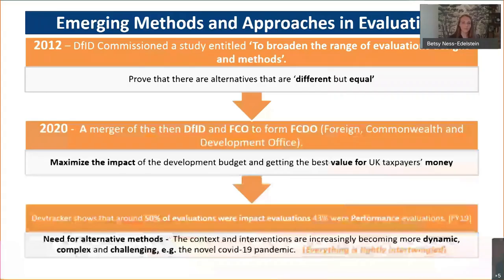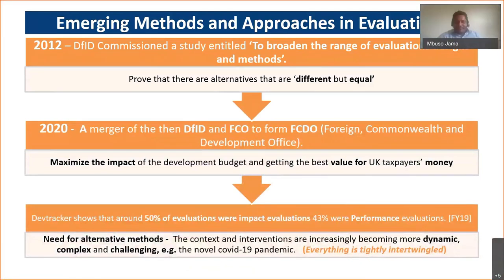Hello everyone. Thanks Betsy for those insights, and also thanks to Sebastian. Just to kickstart my thoughts from the UK perspective — I'll take you back to the then-DFID in 2012. DFID commissioned a study to explore a wide range of evaluation methods and designs. There was a push toward randomized controlled trials, but it turned out that only 5% of programs were suitable for RCTs. So they wanted to understand the alternatives and prove that we have evaluation methods with equivalent rigor but different approaches.